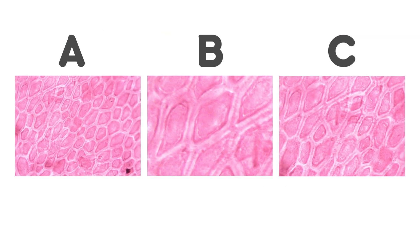Here we are showing you a set of photographs from microscopes A, B, and C. Can you name which microscope — A, B, or C — has the highest magnification based on these images? If your answer is B, well done.